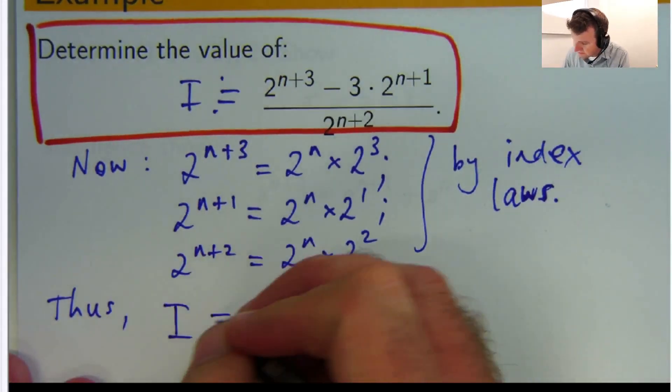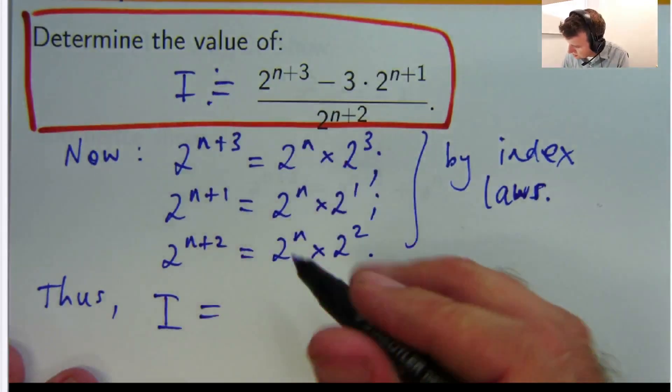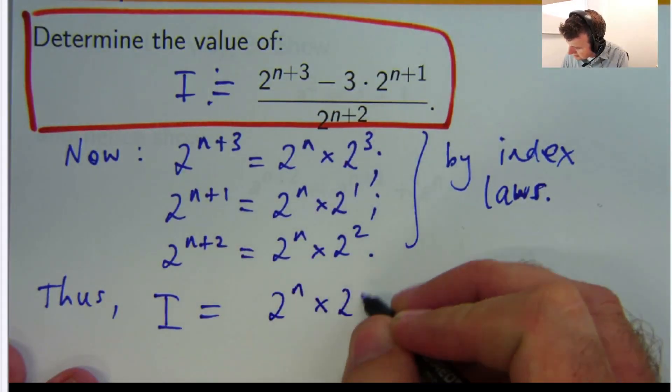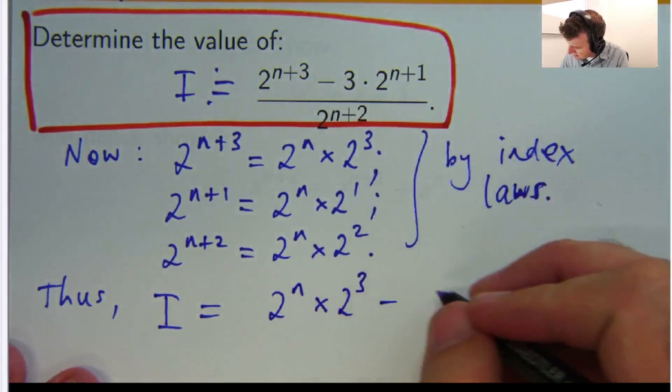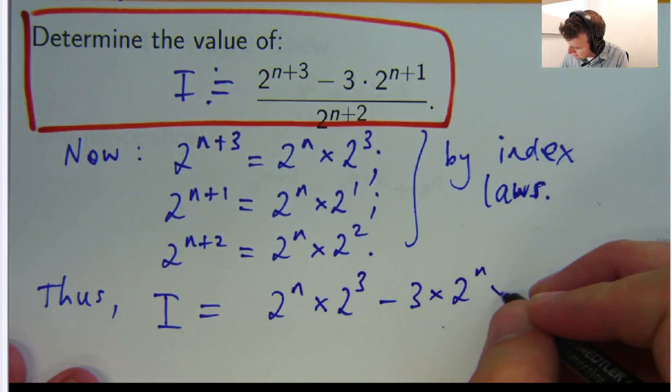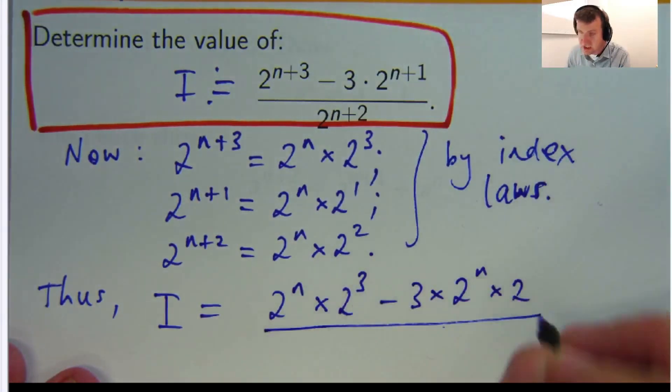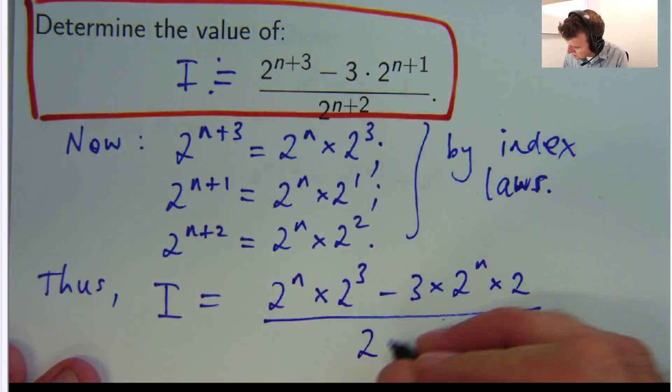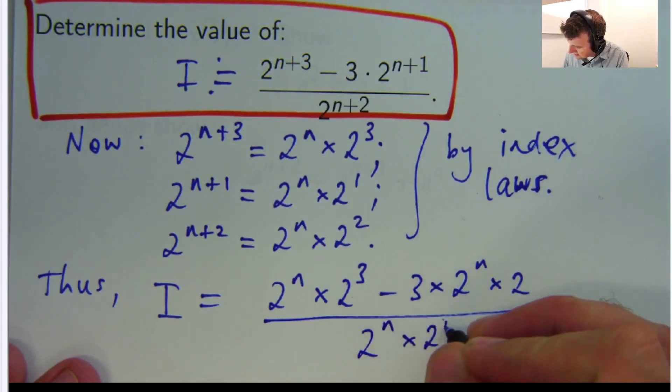Thus, I is 2 to the n times 2 to the 3 minus 3 times 2 to the n times 2, because 2 to the 1 is just 2. And on the bottom, we have 2 to the n times 2 squared.